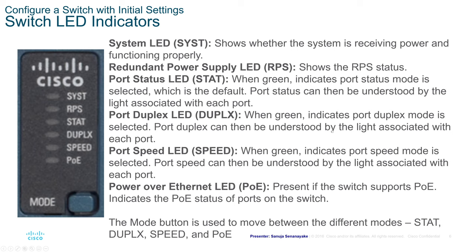Let's look at the switch LED indicators. On your Cisco device, you will have these indicators: SYST, RPS, STAT, Duplex, Speed, and PoE.